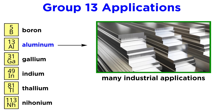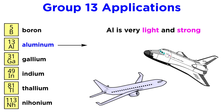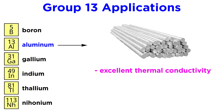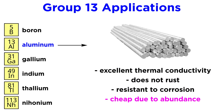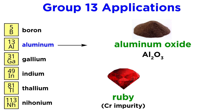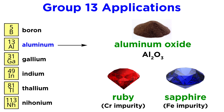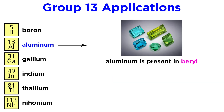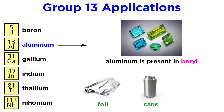Moving on to aluminum, this is considered an ideal metal for industrial application. It is extremely light and strong, so it is used in many airplanes and spacecraft. It has excellent thermal conductivity, it does not rust, it resists corrosion, and it is relatively cheap due to its abundance. Aluminum oxide is used to prepare synthetic corundum gems — with chromium impurity it makes ruby, and with iron impurity it makes sapphire. Aluminum is also present in synthetic beryl gems. And of course everyone is familiar with aluminum cans, aluminum foil, and other such products, while aluminum halides are important Lewis acid catalysts in organic synthesis.